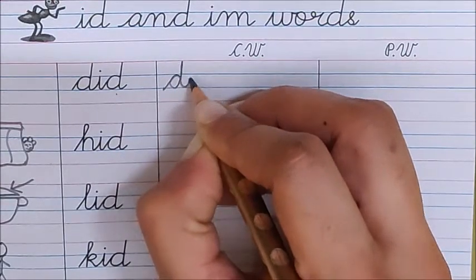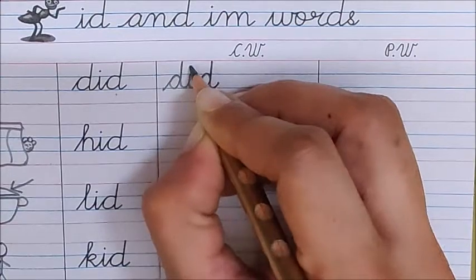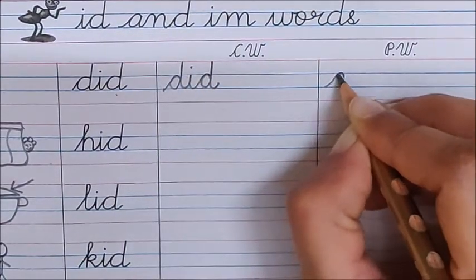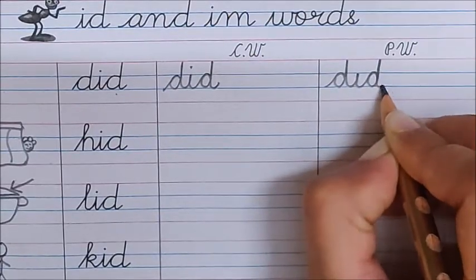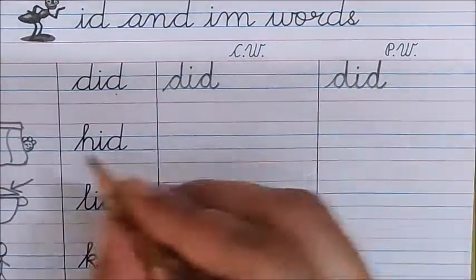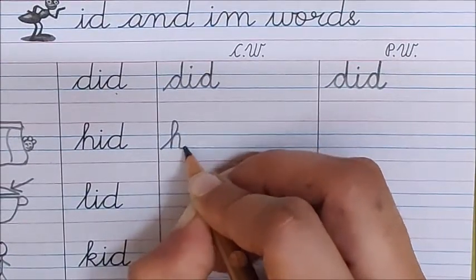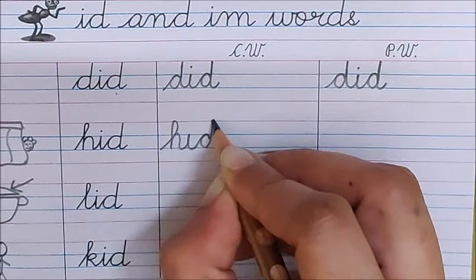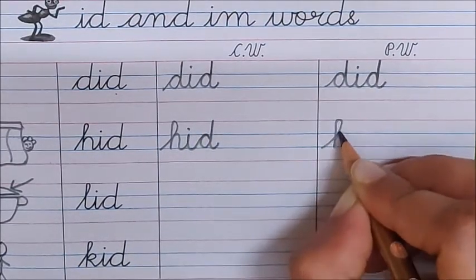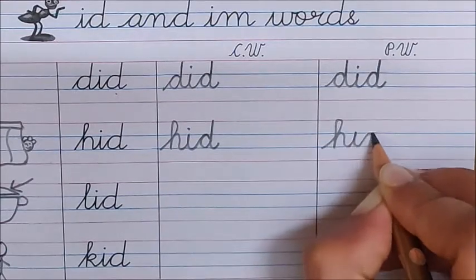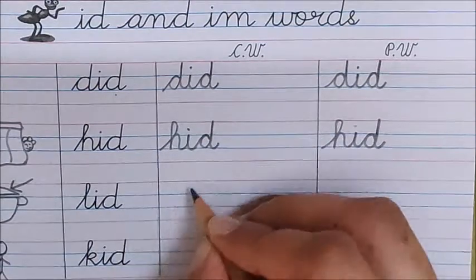D, i, d. Did. Next word is, hid. H, i, d. Hid. H, i, d. Hid.